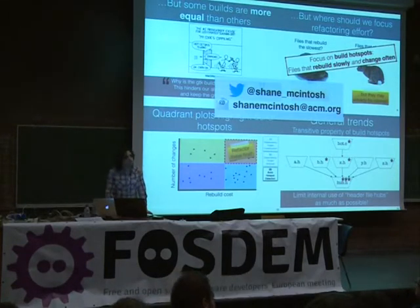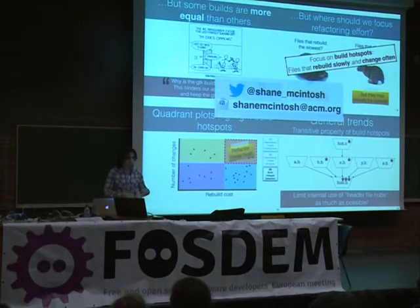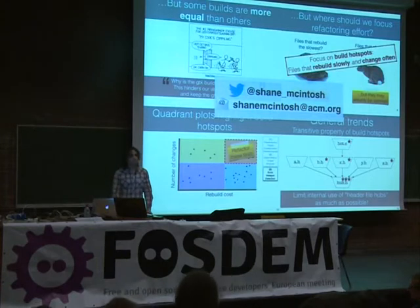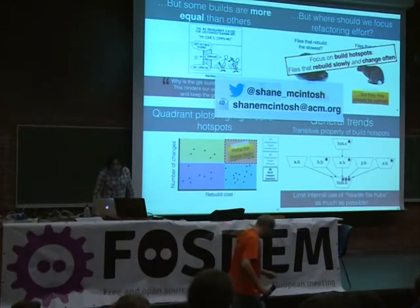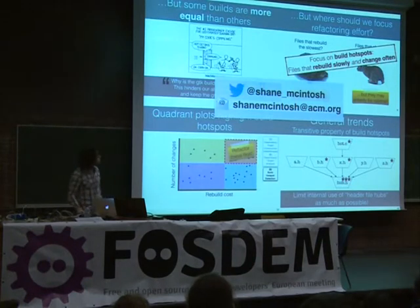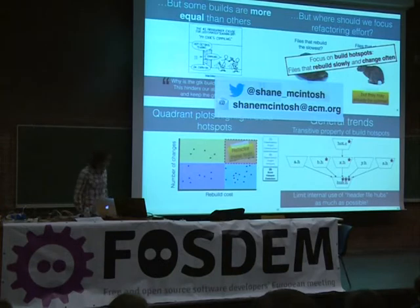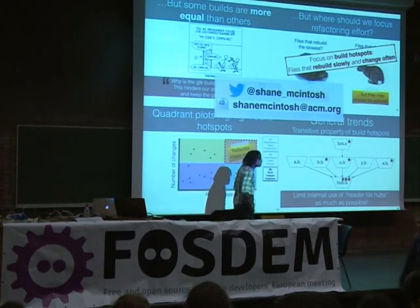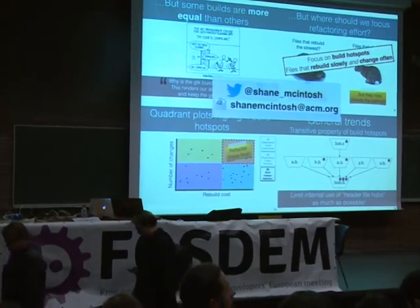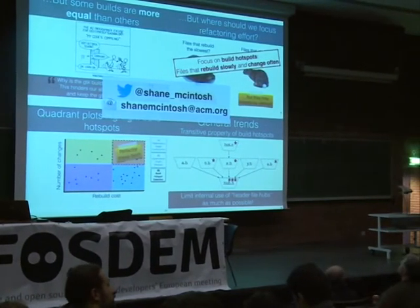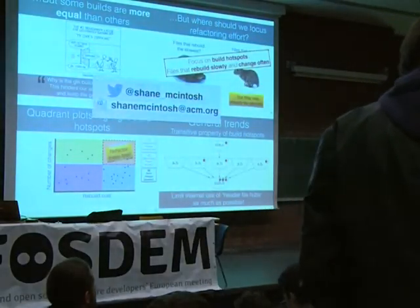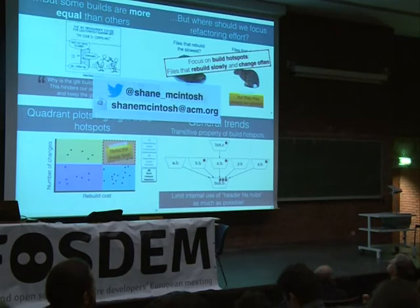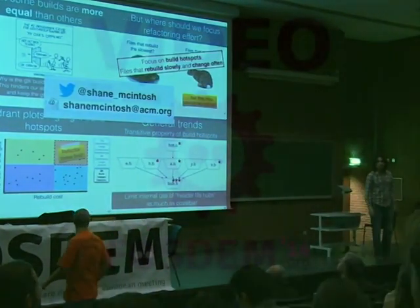Question: Are there any tools available to do this on our own source code? Not quite yet — we just started doing these sort of analyses, but we're working towards automating it and making it available. Another question: Did you find any correlation between programming languages and particularly bad projects? We've only looked at three systems so far. Qt was a C++ one and the other two were C, but it's a little hard to draw causality from such a small set of data.